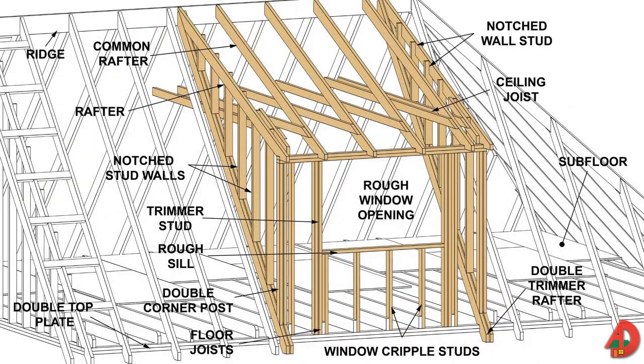The front wall of a shed dormer is usually directly over the exterior wall of a building, and the dormer rafters extend from the main ridge board. They must be pitched enough to shed water and snow. When an opening is framed, the rafters on both sides and the headers at the top and bottom must be doubled.